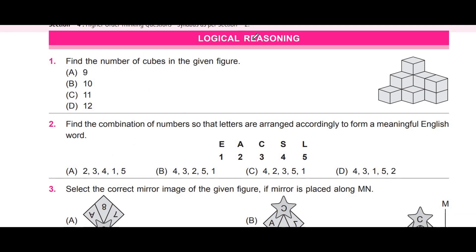The first question asks us to find the number of cubes in the given figure. The options are 9, 10, 11, and 12. Let's count the cubes. These small individual shapes are each a cube. Counting what we can directly see: one, two, three, four, five, six, seven — so we can see seven cubes directly.